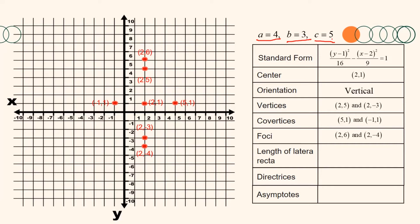Using the vertices and co-vertices, drawing segments passing through them, we can form an arbitrary rectangle that helps in determining the asymptotes. The asymptotes are the diagonal lines of this rectangle. Their equations are determined using the formula y − k = ±(a/b)(x − h). Substituting the values, the asymptotes are the lines y = ±(4/3)(x − 2) + 1.